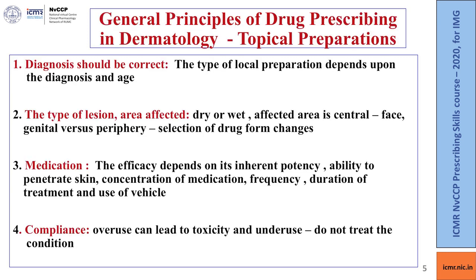The general principles of drug prescribing in dermatology focus on topical preparations. The first principle is that selection of the type of local preparation depends on the diagnosis and the age of the patient. The second principle is that selection of the drug form changes based on the type of region — whether it is dry or wet — and the area affected, whether central such as the face or genitalia, or peripheral.